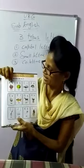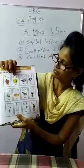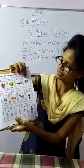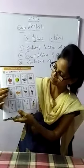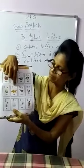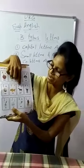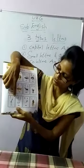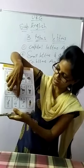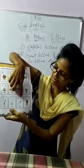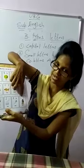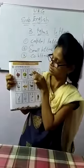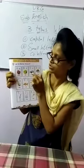Capital A, small a. Capital B, small b. Capital C, small c. Capital D, small d. Capital E, small e. Capital F, small f. Capital G, small g. Capital H, small h. Capital I, small i. Capital J, small j. Capital K, small k. And capital L, small l. When they gave these letters, along with that they gave pictures also.